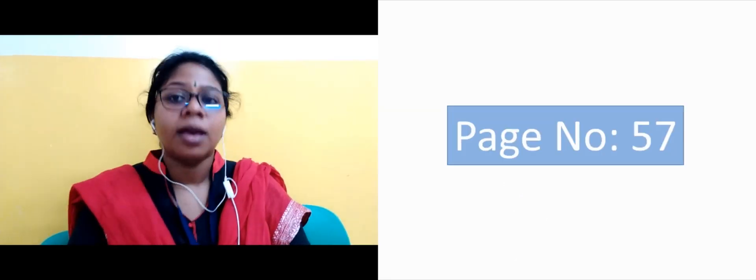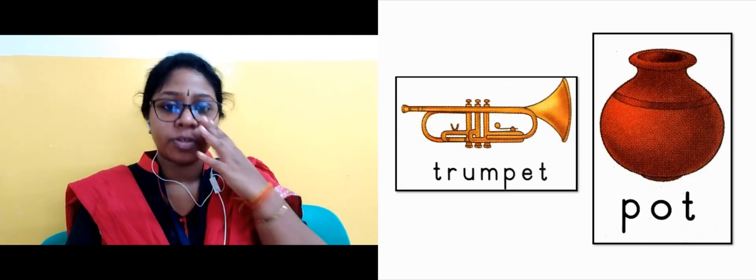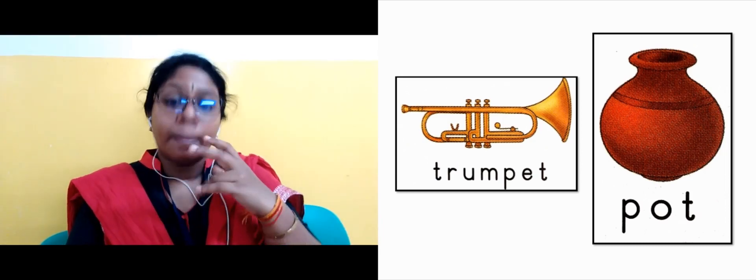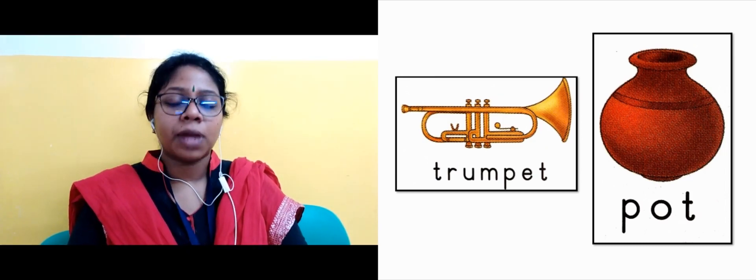Next image is parrot, it's parrot. Next slide, the page number is given, that is page number 57. And the next slide is trumpet. Trumpet, it's an instrument which we used to play. It's an instrument. Yes, trumpet.